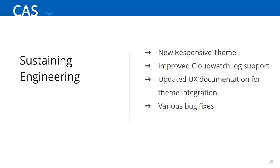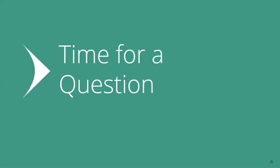Just to go over a couple of things about sustaining engineering that we've contributed back to the CAS community: one is that responsive theme, along with the documentation associated with it so it's easier for you to skin your own theme if you'd like. We've also improved the CloudWatch log support, so any of you deploying to AWS will have a much better experience. And various bug fixes have been made. All right, it's time for another question — there are actually two, so take your time.